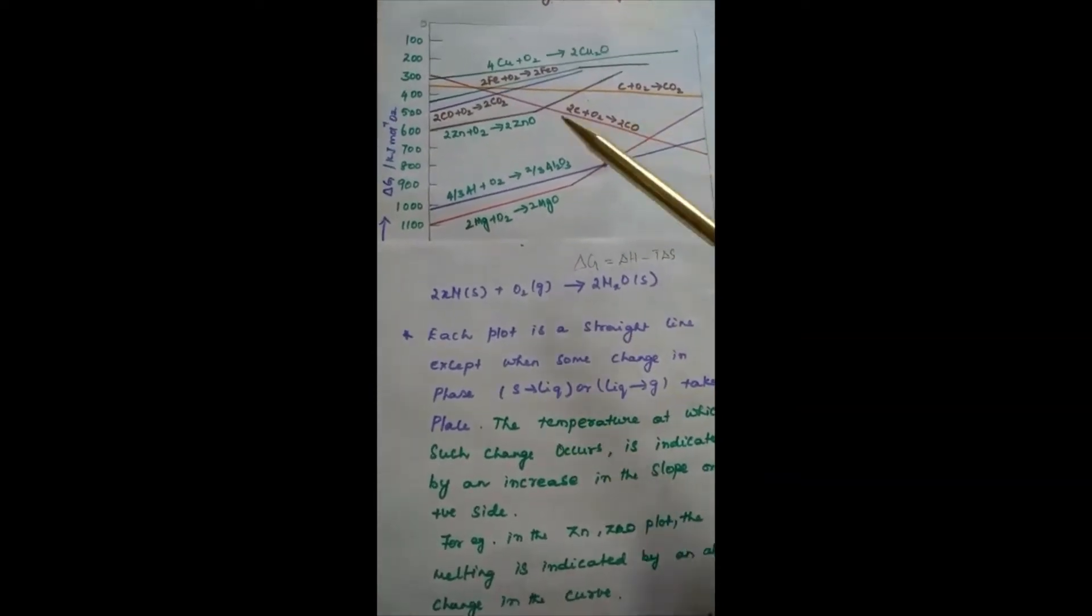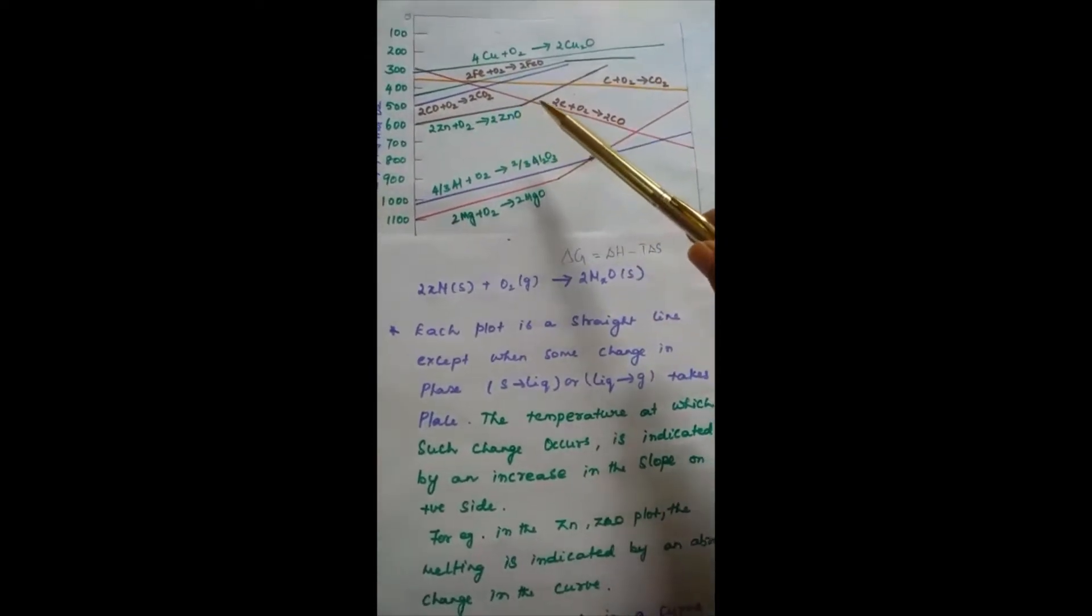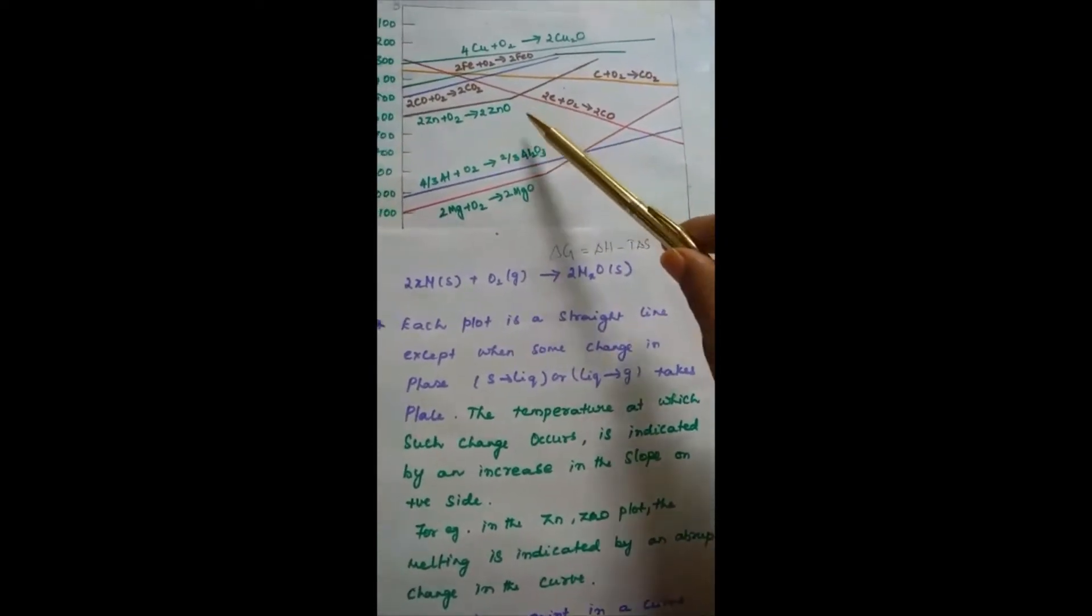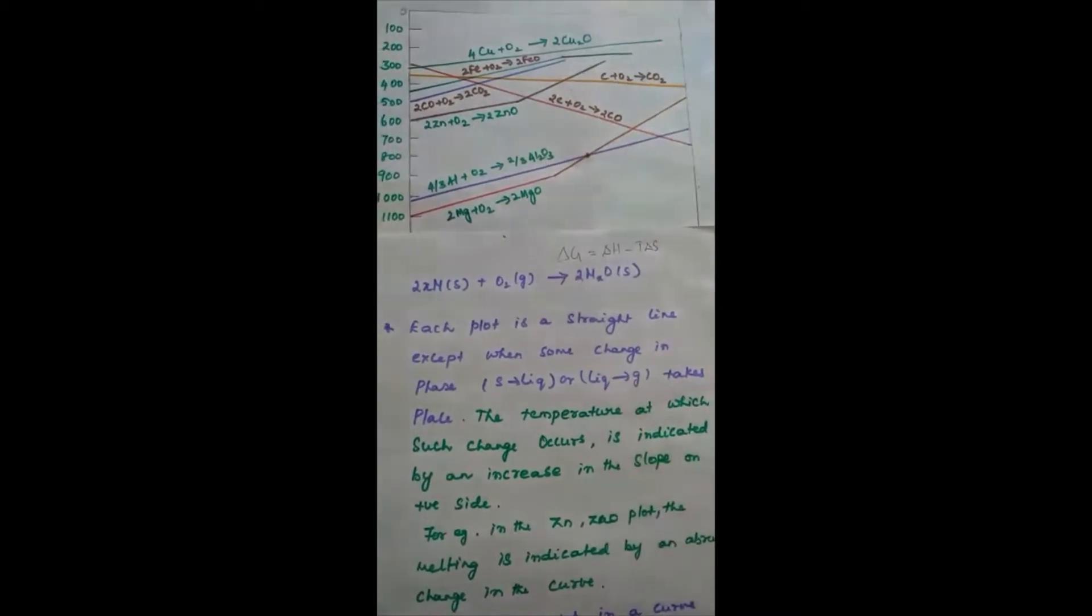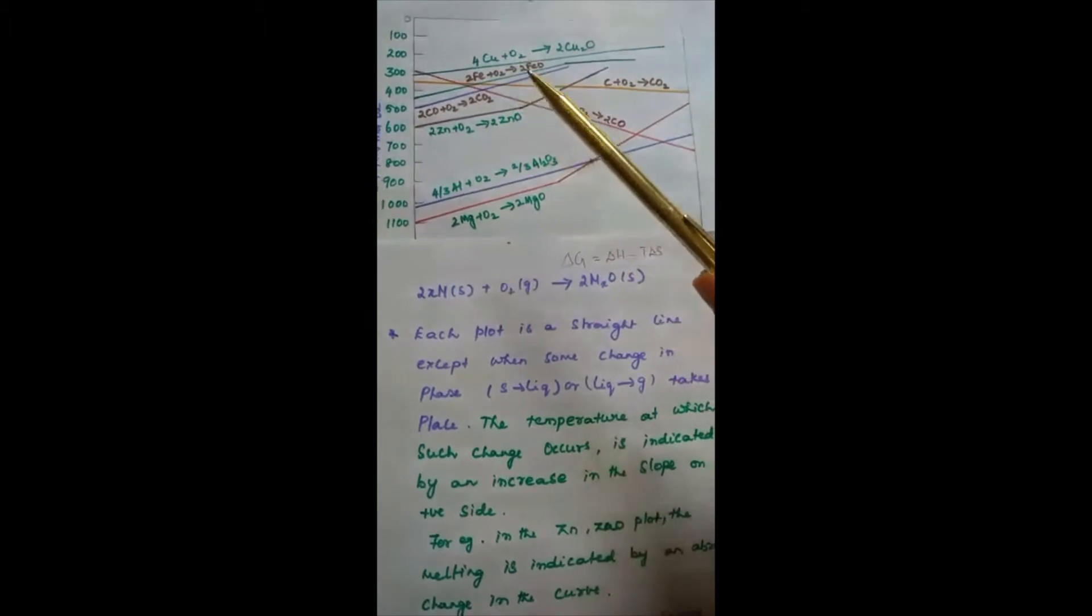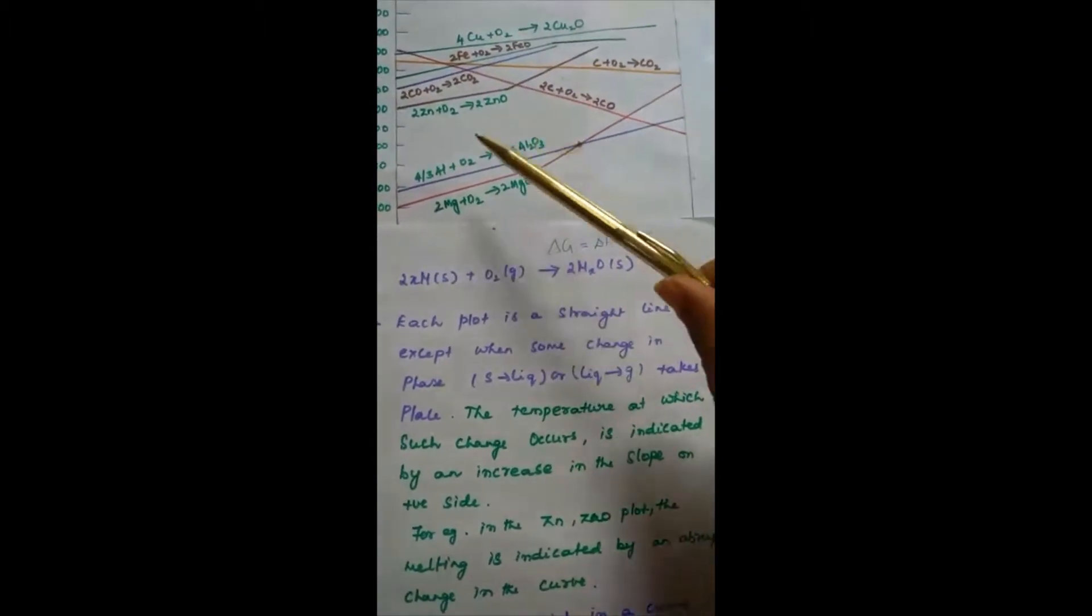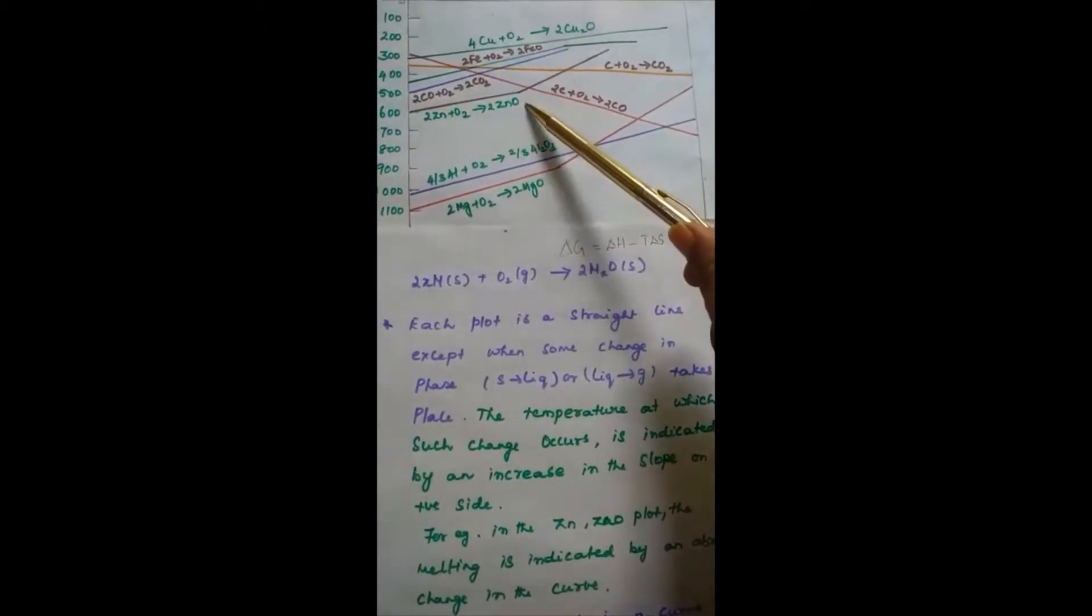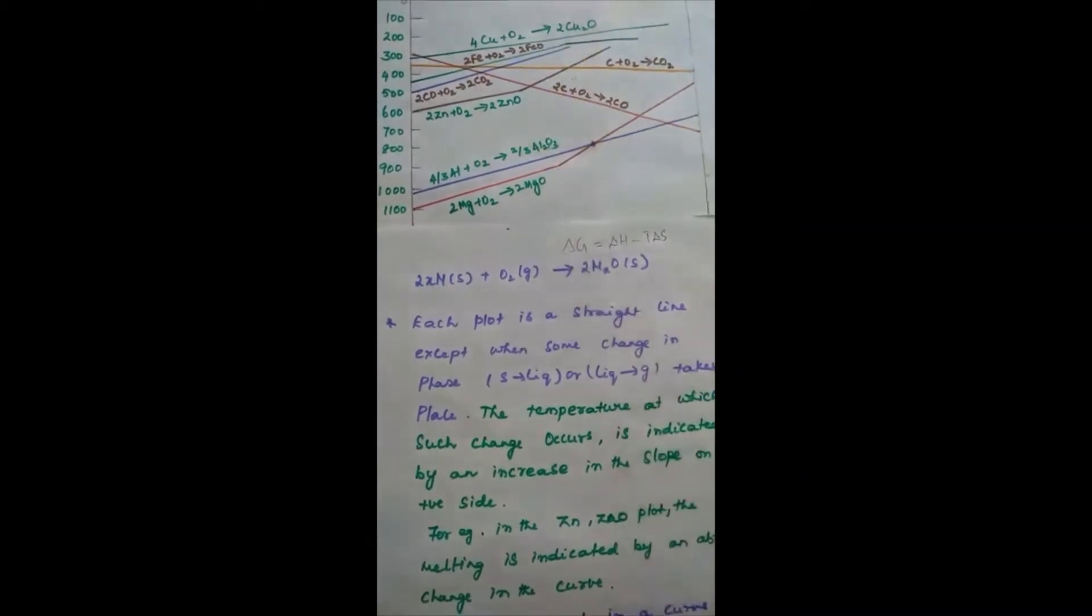For example, in this curve, the Zn-ZnO line, the melting is indicated by an abrupt change in the curve. This is where the phase change occurs.